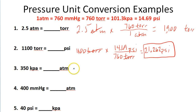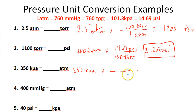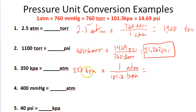Next we've got 350 kilopascals and we want to know how many atmospheres this is. We want to cancel out kilopascals — put that at the bottom — and convert to atmospheres at the top. One atmosphere is equal to 101.3 kilopascals, so kPa cancels. I take 350 divided by 101.3 and end up with 3.455 atmospheres.